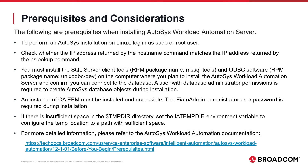The following are prerequisites when installing Autosys Workload Automation Server. To perform an Autosys installation on Linux, log in as sudo or root user. Check whether the IP address returned by the hostname command matches the IP address returned by the nslookup command. You must install the SQL Server Client Tools RPM Package, MS SQL Tools, and ODBC Software — Unix ODBC Dev — on the computer where you plan to install the Autosys Workload Automation Server, and confirm you can connect to the database.